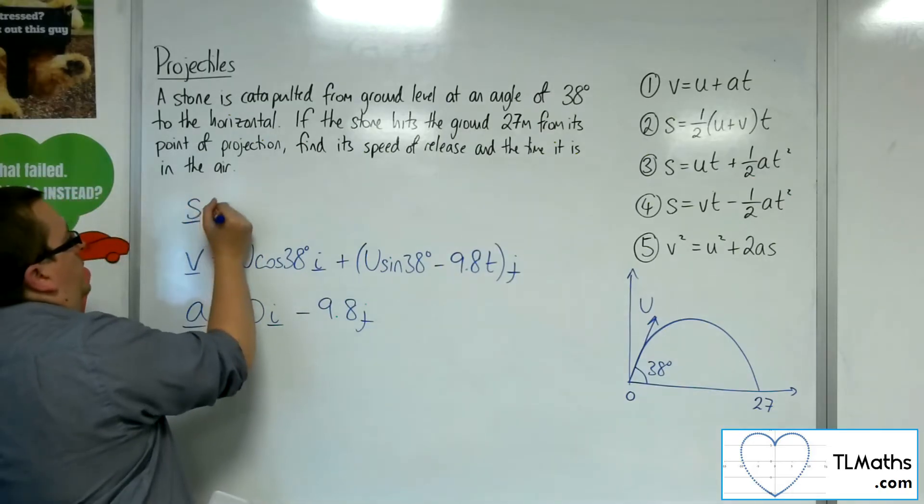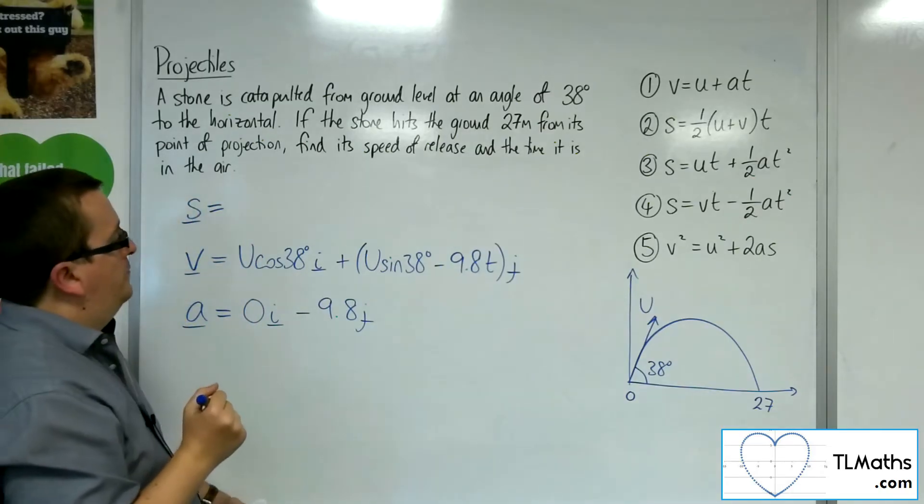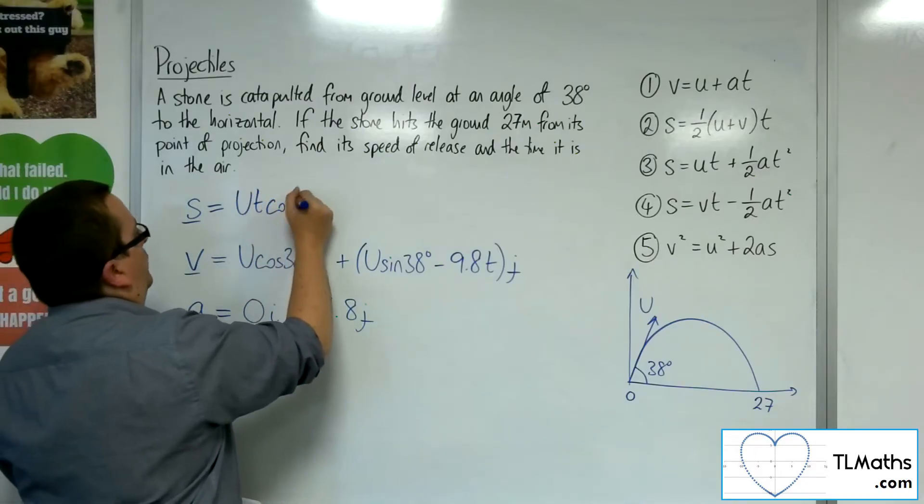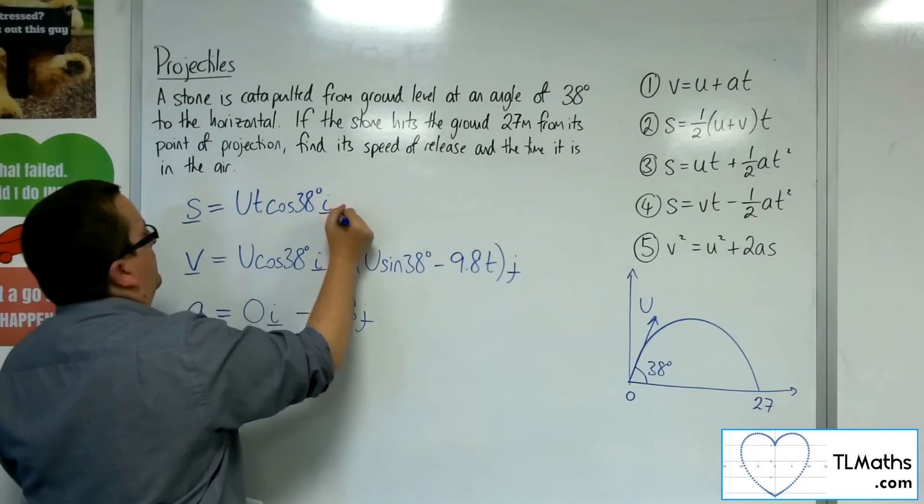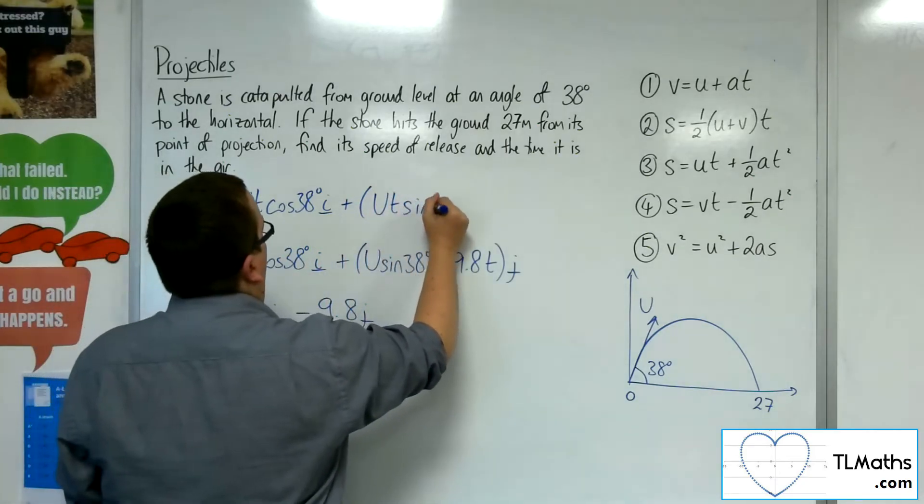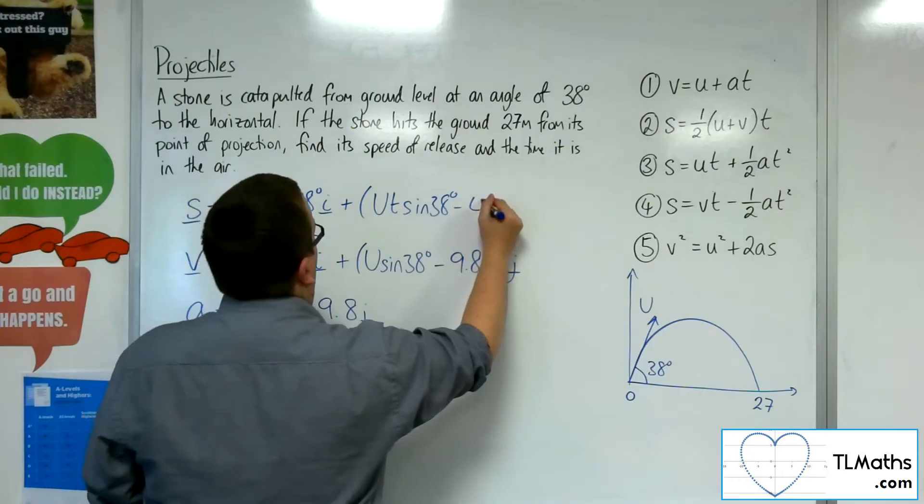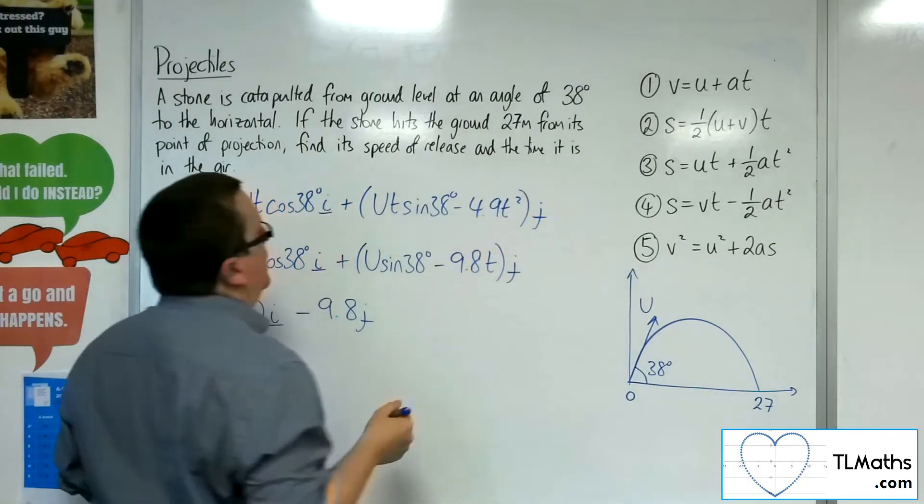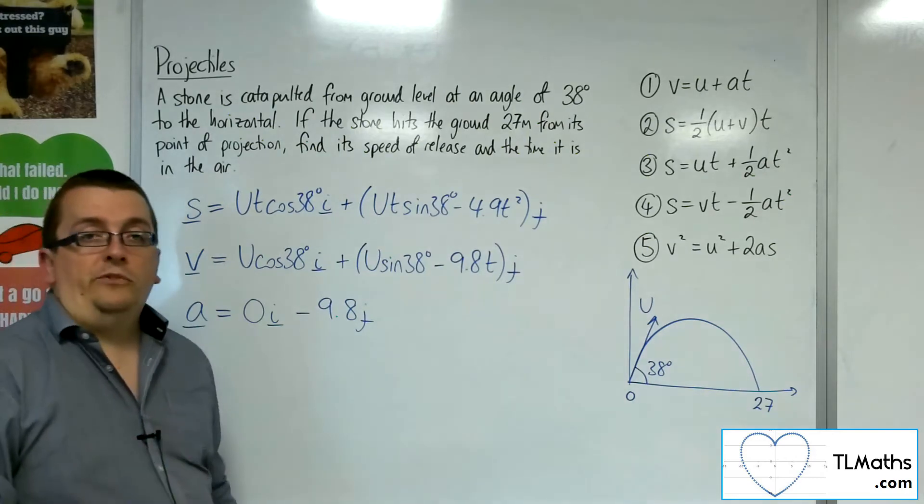Then the displacement. So we're going to get ut cosine 38 i plus ut sine 38 take away 4.9t squared j. Where the initial conditions are that I'm starting from 0, 0.